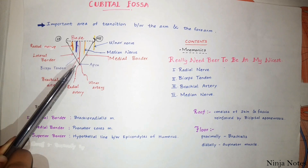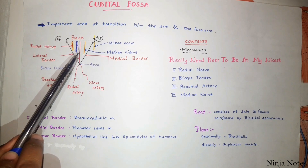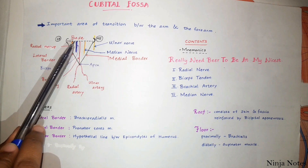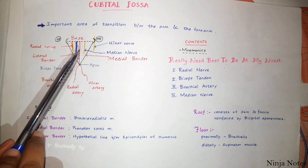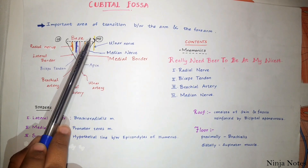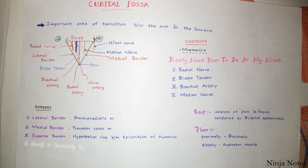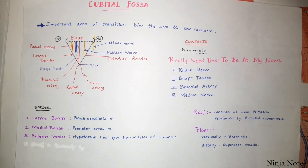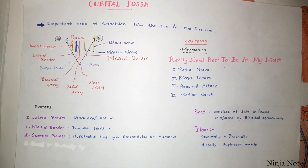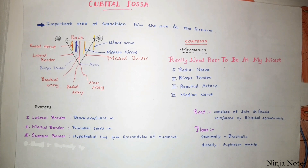This is what usually happens. But there are some clinical cases where this brachial artery bifurcates into the radial and ulnar arteries at the cubital fossa itself. We also have the median nerve here, and the ulnar nerve posterior to the medial epicondyle of the humerus bone. This cubital fossa has a roof and floor. The roof consists of the skin and fascia and is also reinforced by the bicipital aponeurosis. The floor is proximally formed by the brachialis muscle and distally by the supinator muscle.